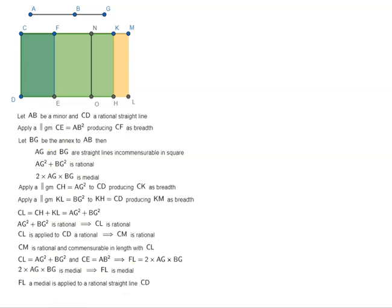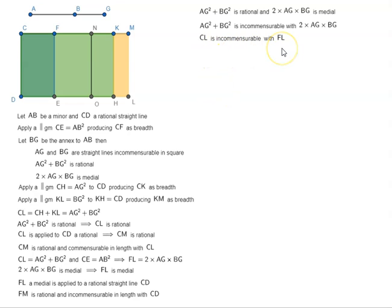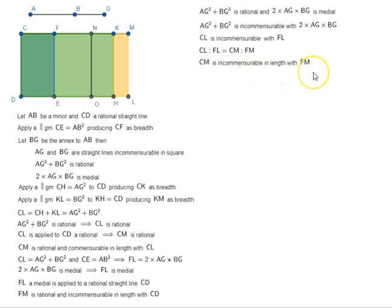Since FL is medial and it is applied to a rational straight line CD, FM is rational and incommensurable in length with CD. Now AG² + BG² is rational and 2·AG·BG is medial, which means AG² + BG² is incommensurable with 2·AG·BG. So CL is incommensurable with FL. Since CL:FL = CM:FM, CM is incommensurable in length with FM. Therefore CM and FM are rational and commensurable in square only.